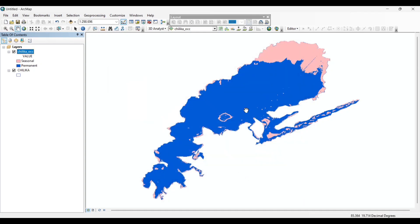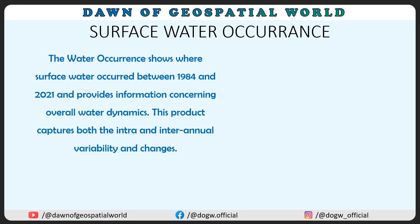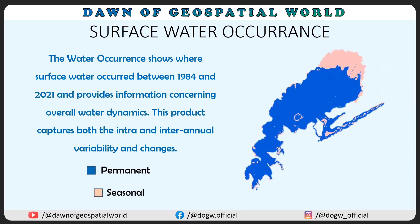Let's learn about what is Surface Water Occurrence. Surface Water Occurrence shows where surface water occurred between 1984 to 2021 and provides information concerning overall water dynamics. This product captures both the intra and inter-annual variability and changes. Here, the blue color denotes permanent water course and the pink color denotes the seasonal water course.